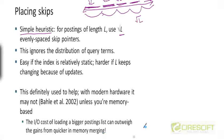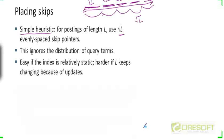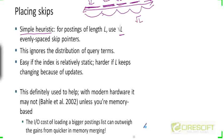Are skip pointers useful for OR queries? We saw clearly how they can speed up AND queries when postings lists are in main memory. But for OR queries, all elements in both lists need to be added to the answer, which means all of them must be visited. So there is no point in skipping at any stage — skip pointers do not help with OR queries.